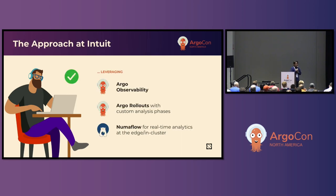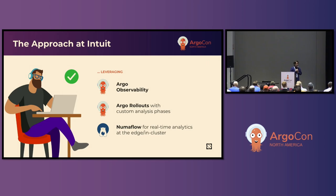The approach at Intuit is to leverage Argo observability — a feature contributed by Intuit about a year ago — also Argo rollouts with custom analysis steps, because the key to getting the full power of Argo rollouts is by using custom analysis steps where you analyze your data and make the best decisions. And also a new project which we have just released a 1.0 GA version of, which Intuit is contributing to open source, called NumaFlow. This runs the key analytics pipeline and allows in-cluster analytics to automate all of this without having to send metrics out of your cluster.